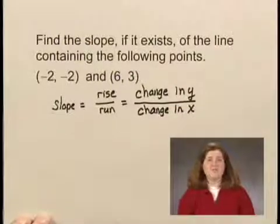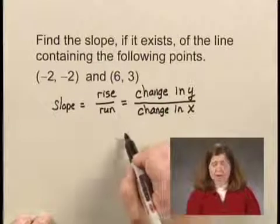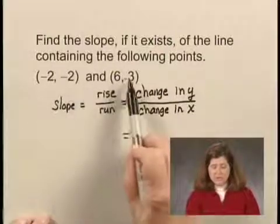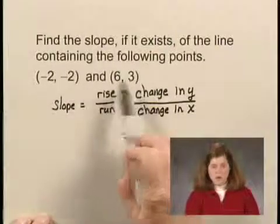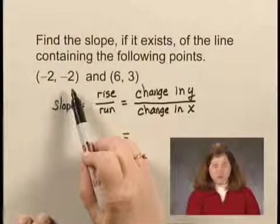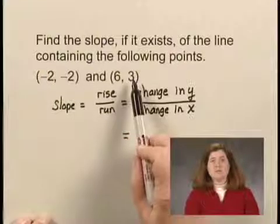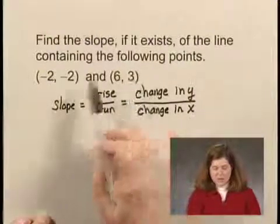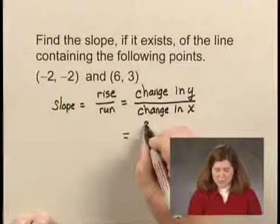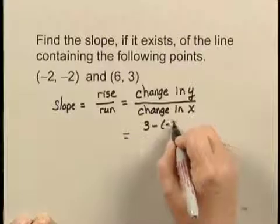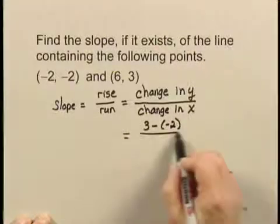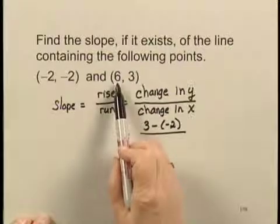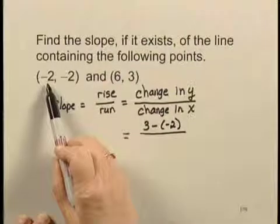To find the change in y, we subtract y coordinates from these two points. We can subtract either -2 minus 3 or 3 minus -2. But the order we do the y subtraction, we have to do the x subtraction in the same order. So let's choose to subtract 3 minus -2 for the change in y. In the change in x, I need to subtract the x coordinates in the same order, so I need to subtract 6 minus -2.